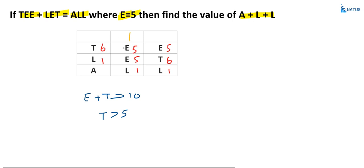Now check if there is any carry from this column to the next. 1 plus 5 equals 6, plus 5 equals 11 — so 1 is written and 1 is carried over. Now the sum in the leading column: 1 plus 6 equals 7, plus 1 equals 8. So the value of a is equal to 8, confirming t plus LET equals ALL.